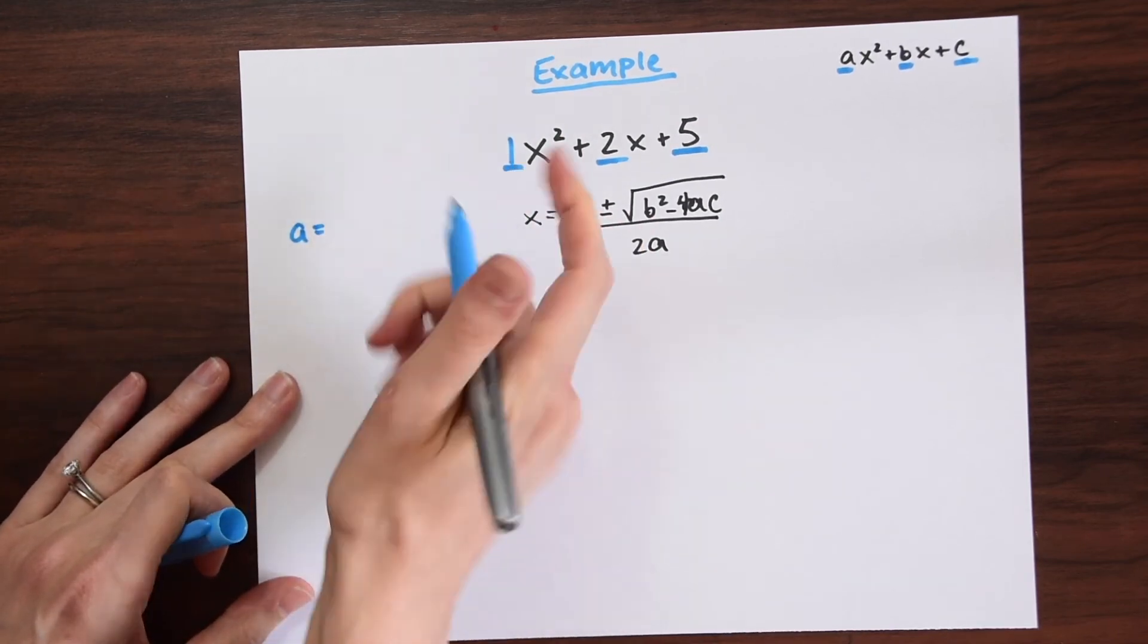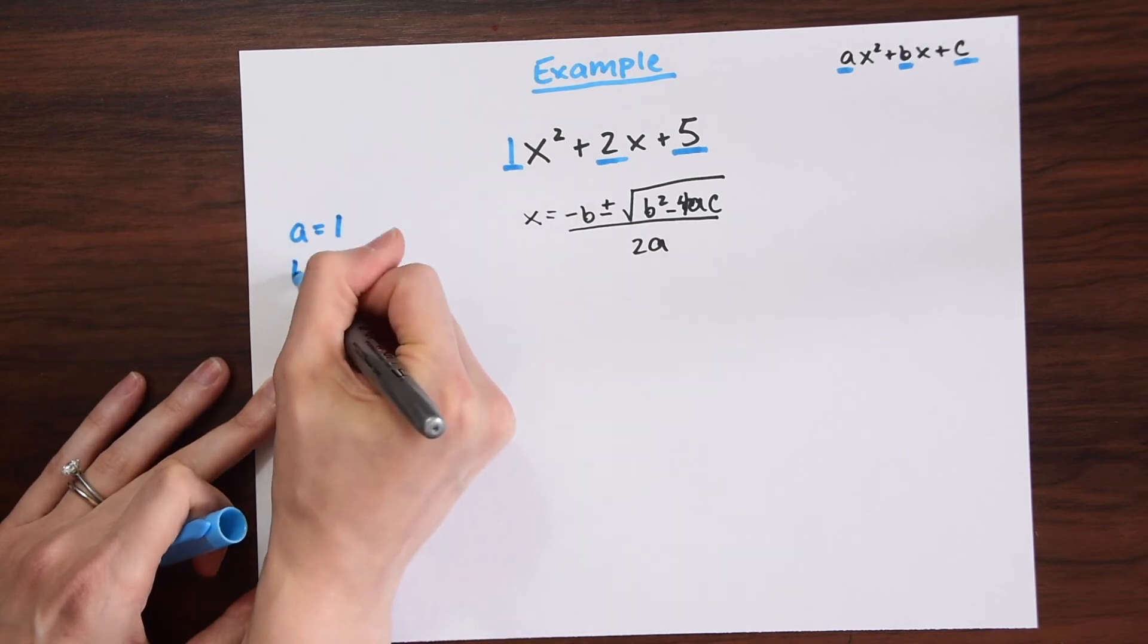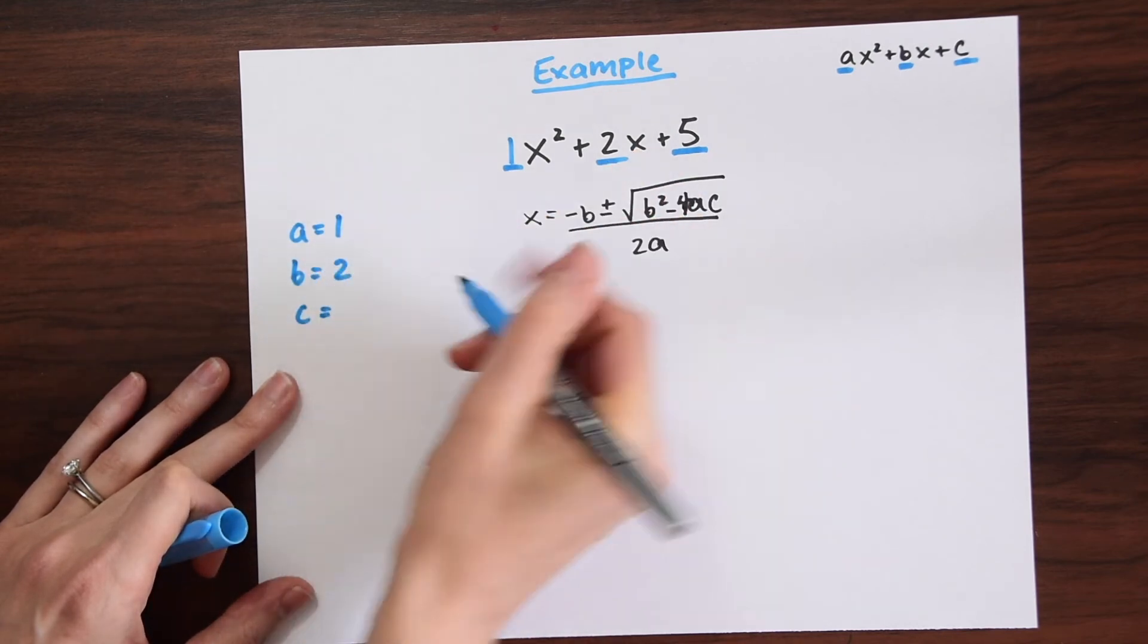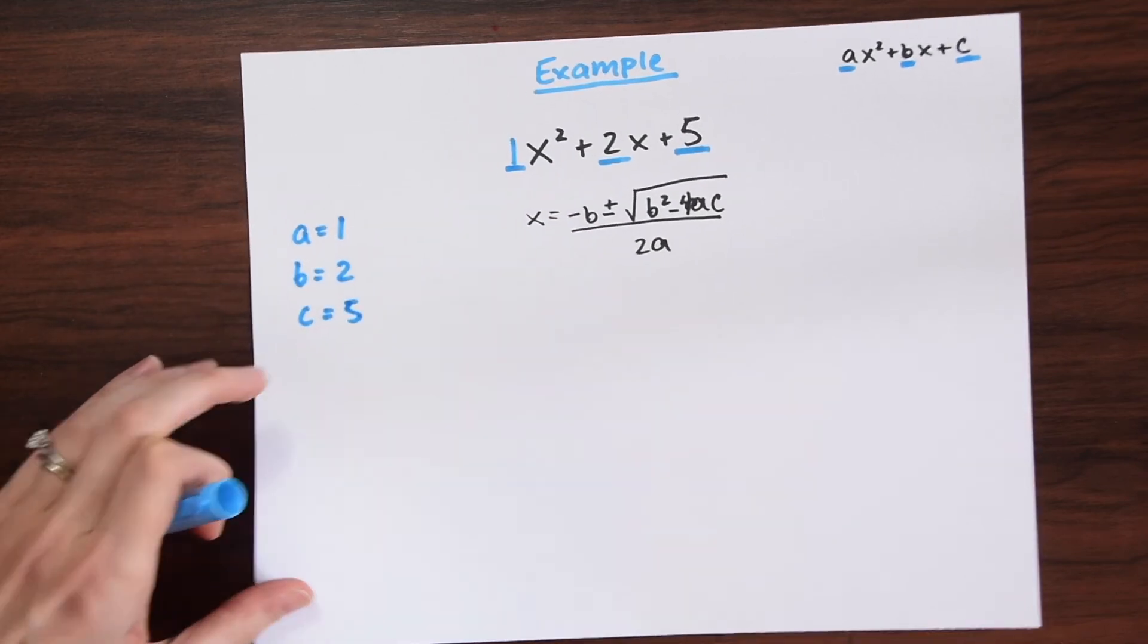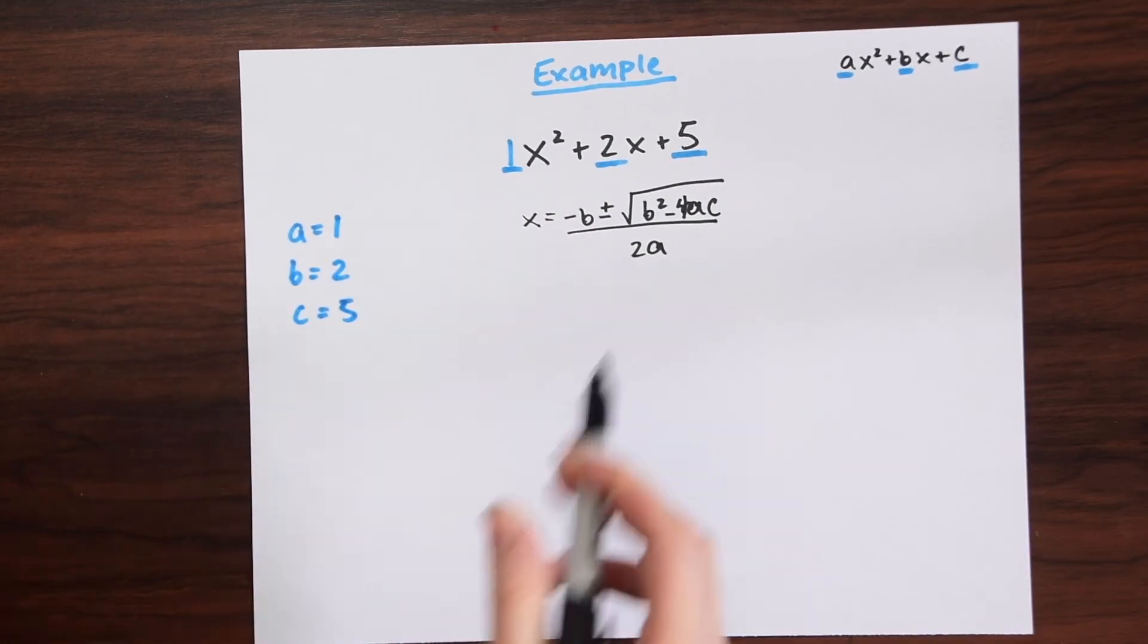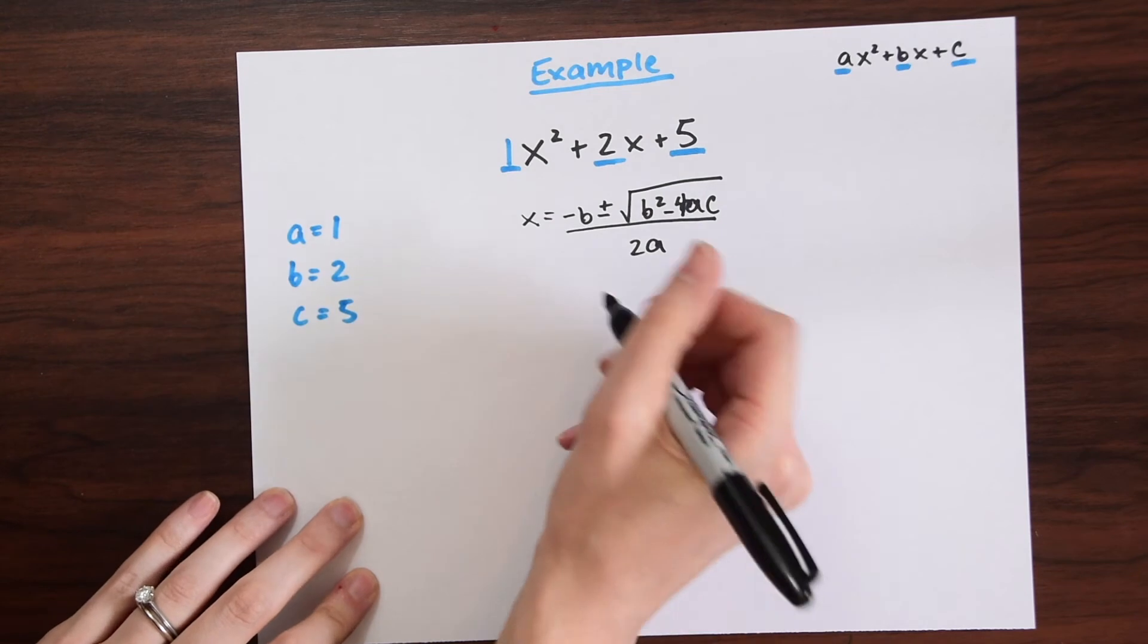Let's write out our coefficients on the side. Here we have a equals 1, b equals 2, and c equals 5. Writing these out on the side will make filling in this formula so much easier.